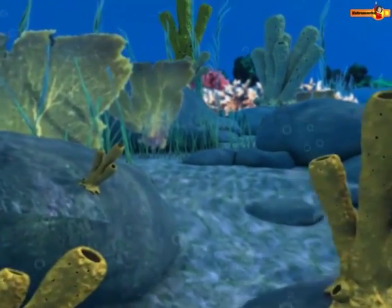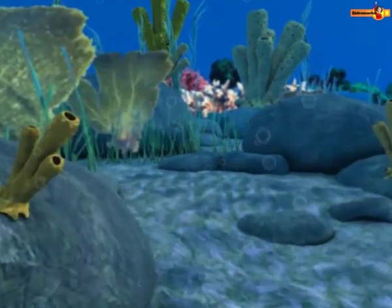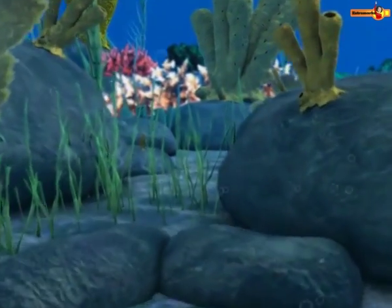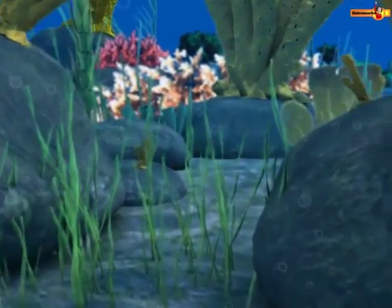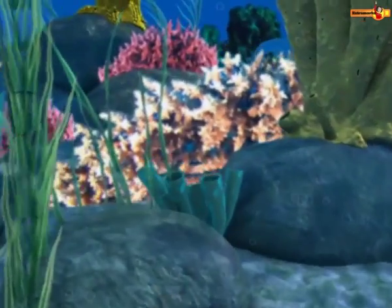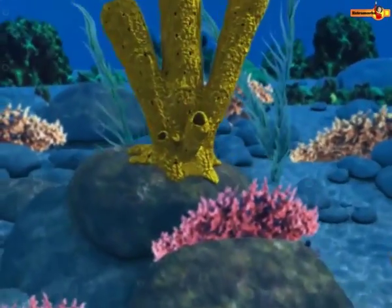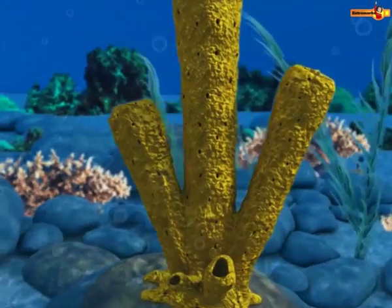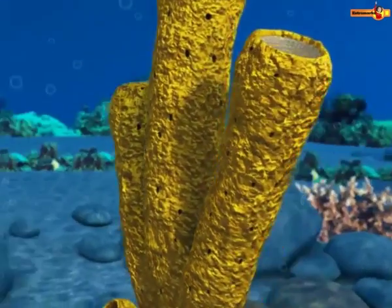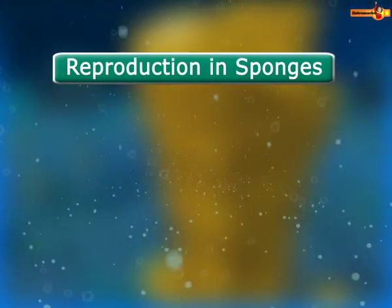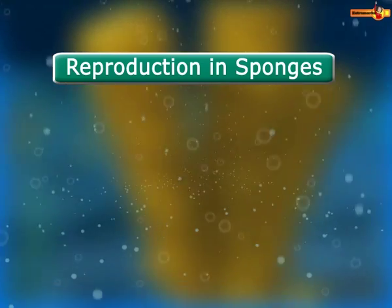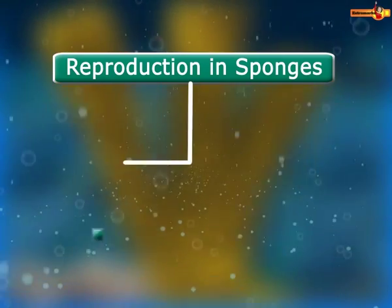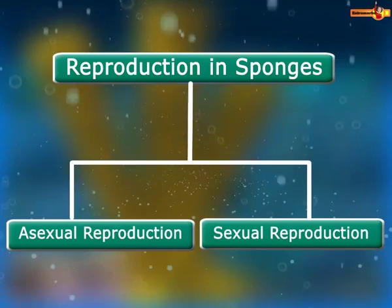Sponges are the simplest multicellular and bottom-dwelling organisms. Like all other organisms, the sponge produces new offspring by the process of reproduction. Sponges are generally hermaphrodite and they reproduce both asexually and sexually.